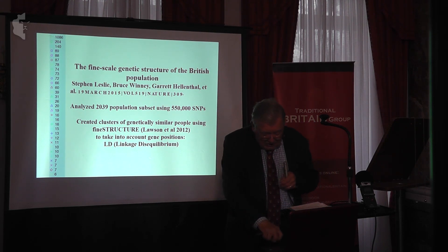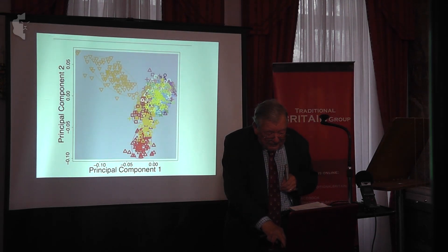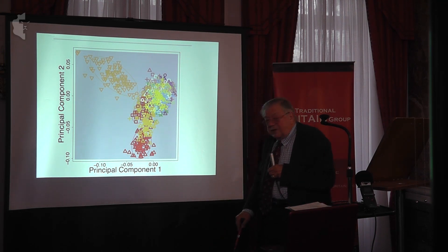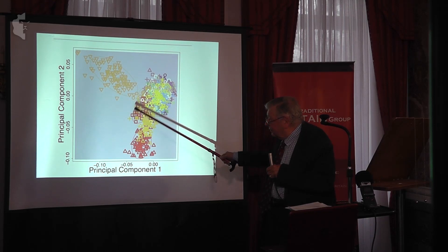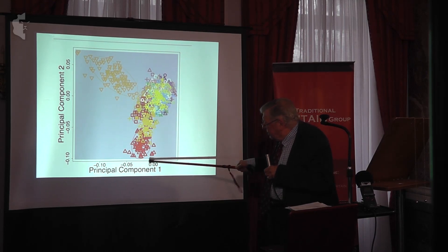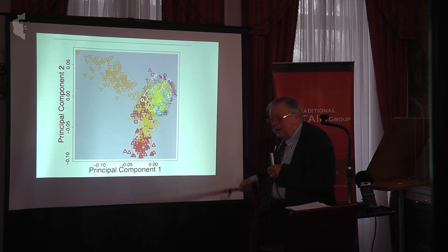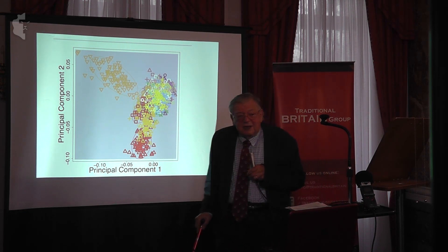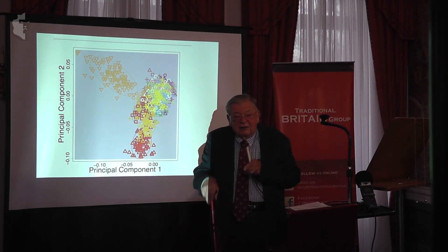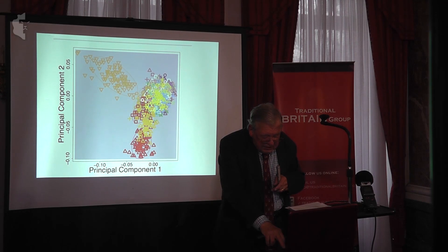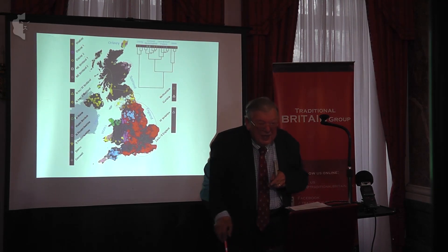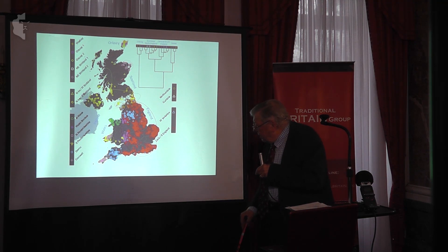Our original data was published first in 2015. If you don't take into account where people come from, you get a mess — all the symbols jumbled together. Even the Orkney Islands don't stick out. But if you do the classical analysis without taking into account how genes are inherited together, you don't get much information. If you do it properly, using the indication of where genes lie, you get a much clearer picture.